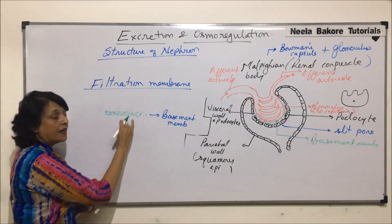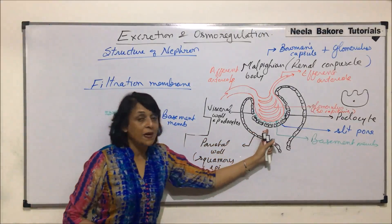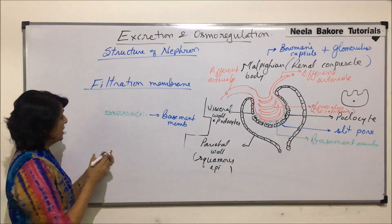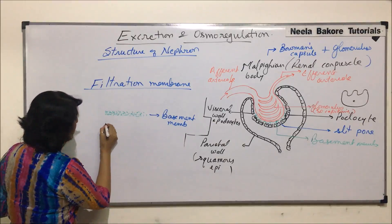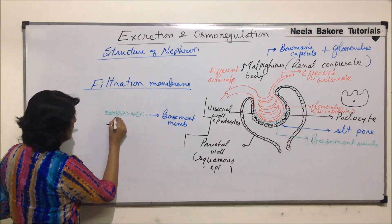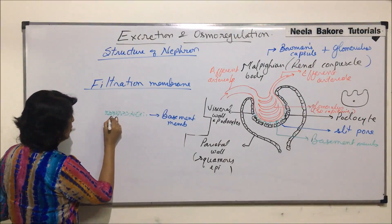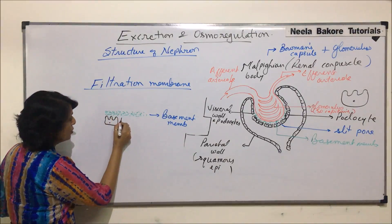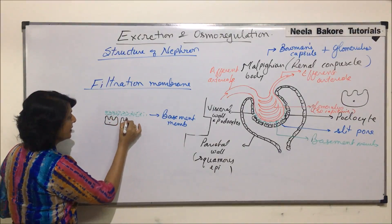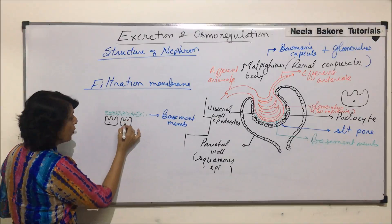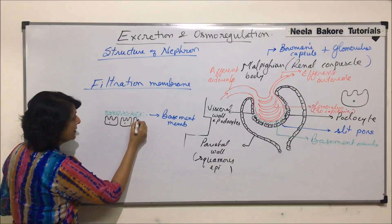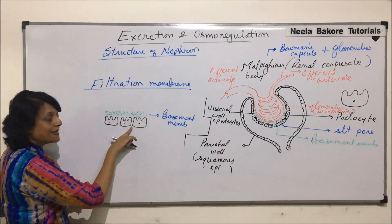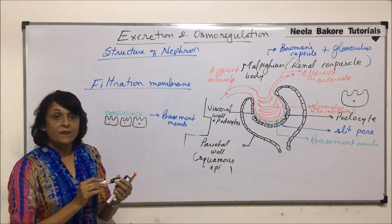On the lower side of the basement membrane are podocytes. Let us draw these podocytes here with those projections and let us also show the slits — the pore slits. That means this membrane also has these perforations.